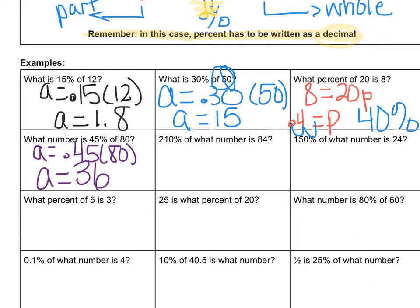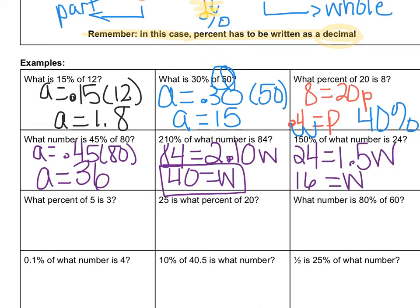Now, it says 210% of what number is 84. So 84 is our part, so that's what we're going to put over here, and then that 210%, remember as a decimal, so you move it over two spots, that's 2.1, and you can add the zero if you want, and then you can put a W. We're going to divide both sides by 2.1, and W is going to equal 40. And that would make sense that our whole is smaller than that part because it's a 210%. Go ahead and try the next one. Let's see if we come up with the same answer. Make sure you put it into the equation and solve.